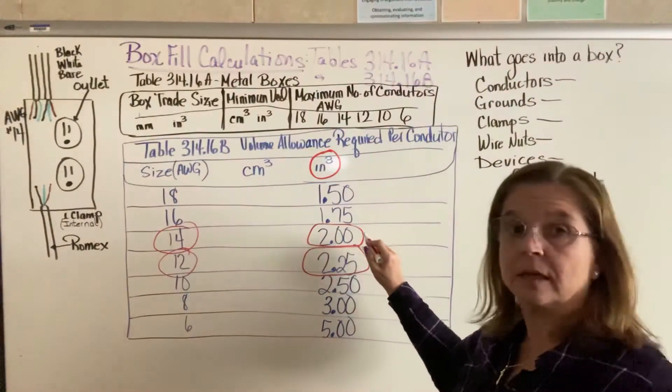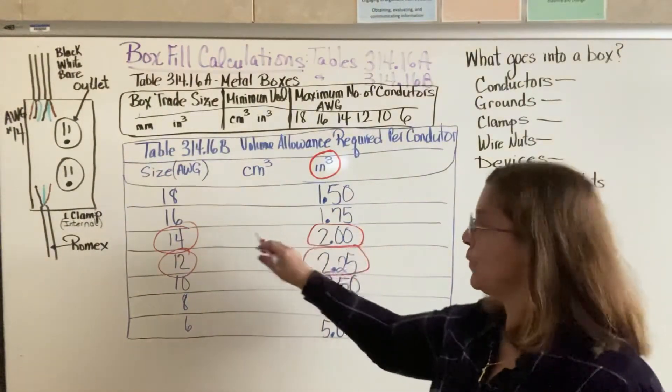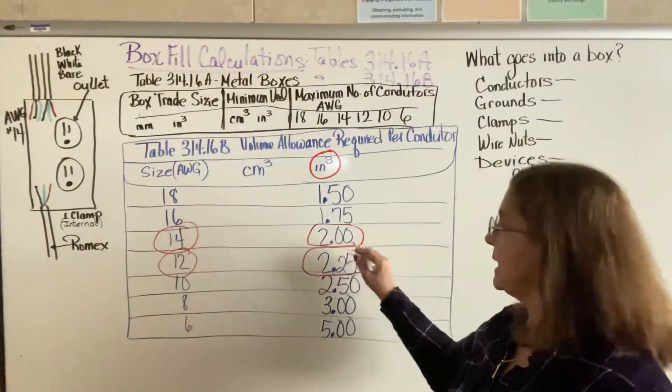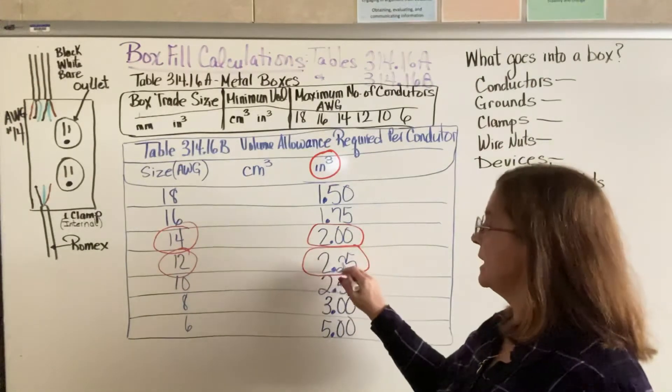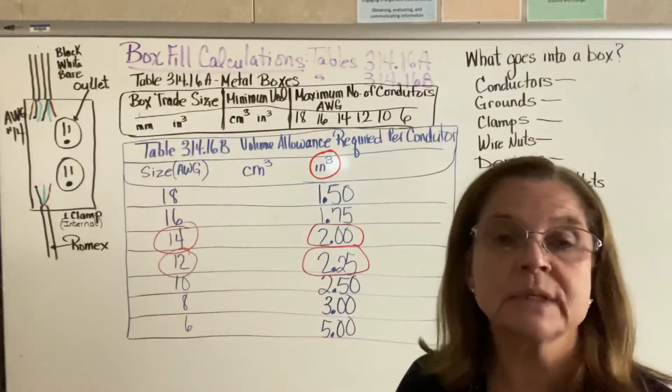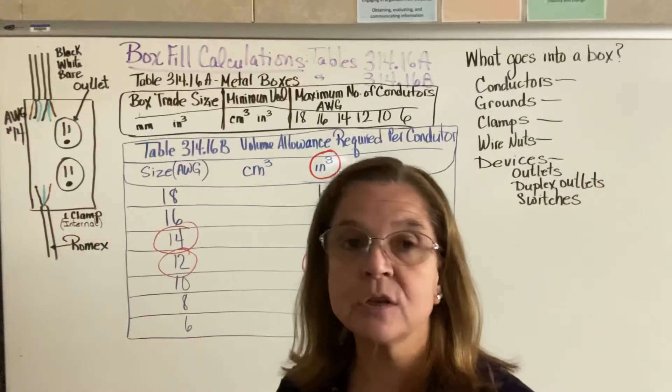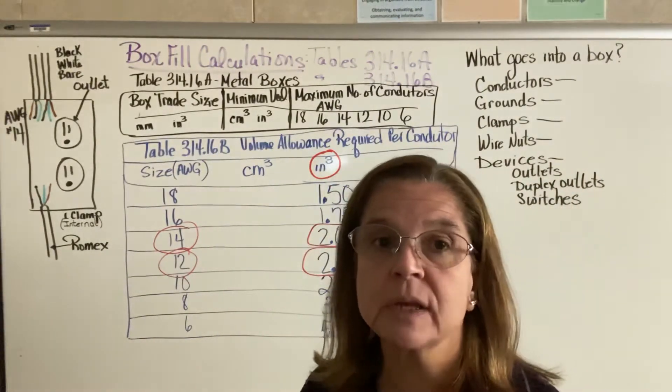Every conductor that is size 14 will take up 2 cubic inches of space. Every conductor that is size 12 will take up 2.25 cubic inches of space.